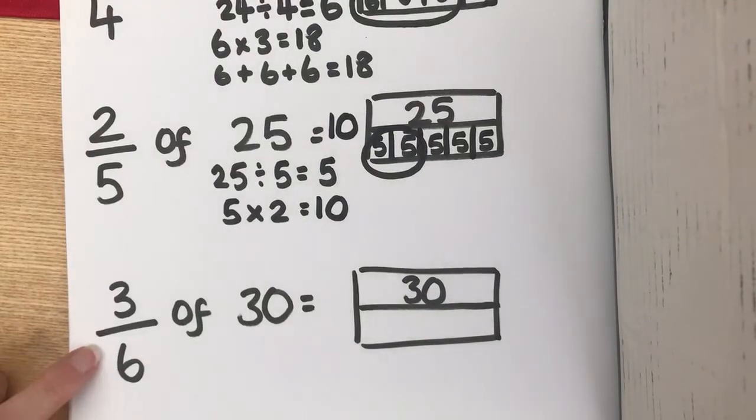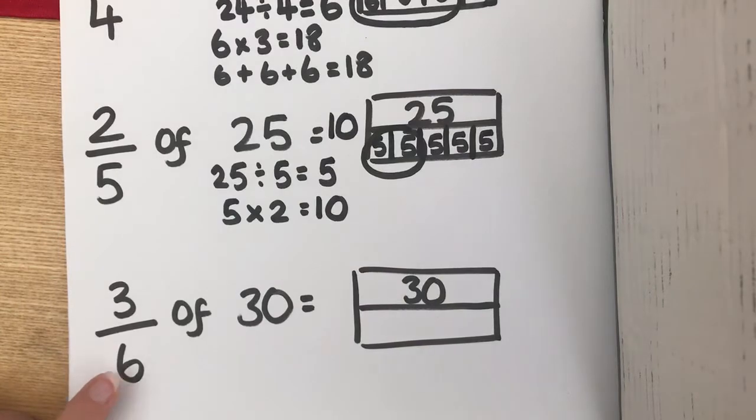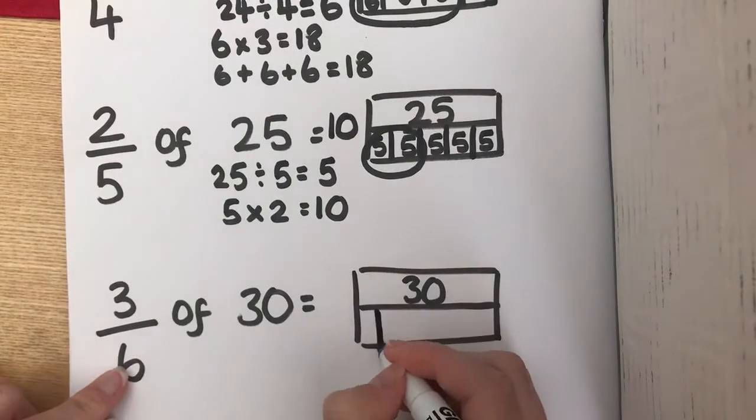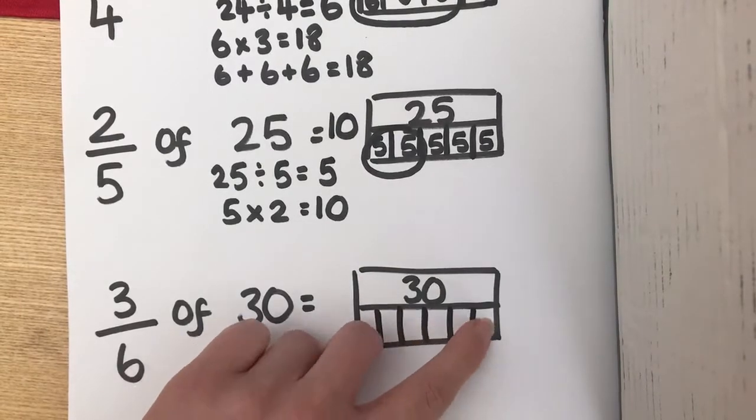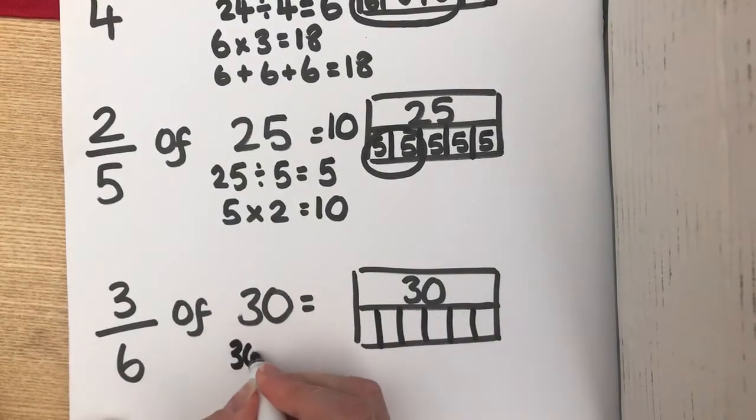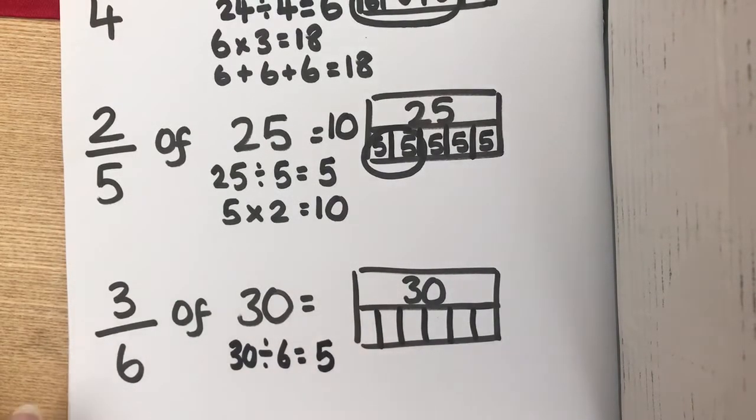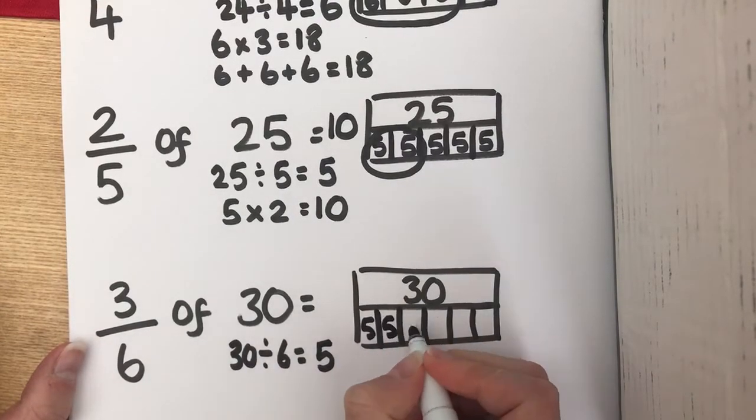And then we've got 3 sixths of 30. So, 30 is our whole. This time, we're going to split the bottom bar into 6. To work out what each sixth is worth, we're going to divide 30 by 6. And we should hopefully know that that is 5. And then we're going to label our fives.